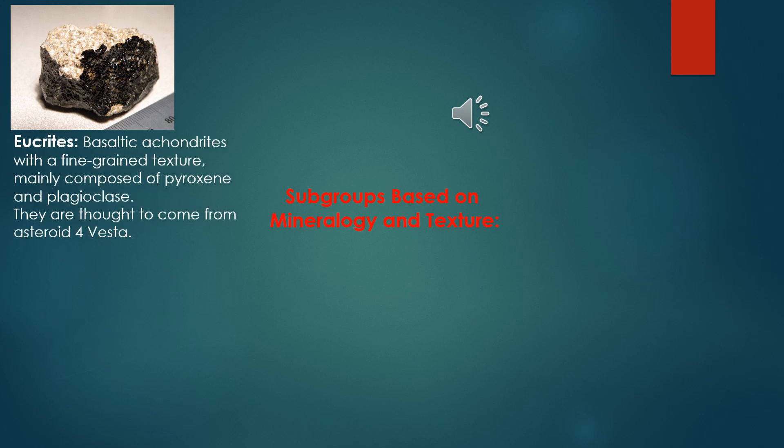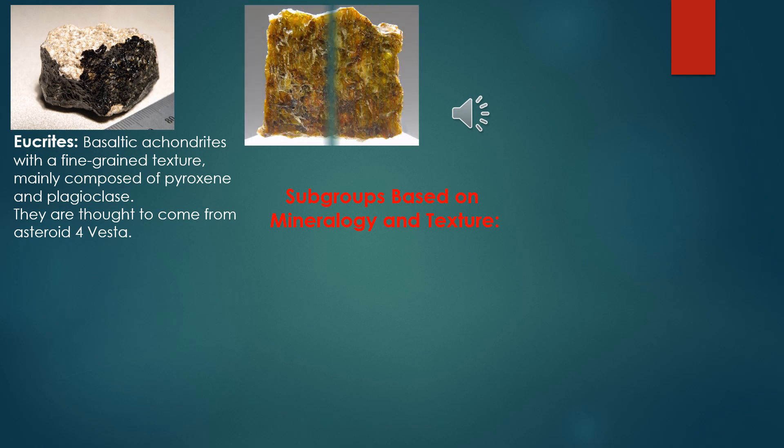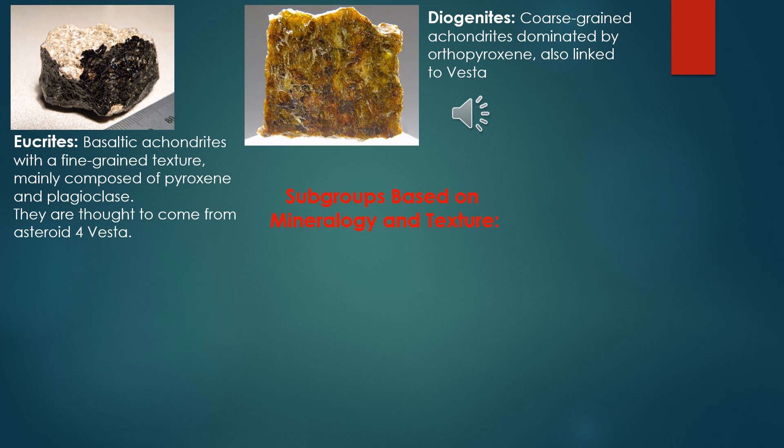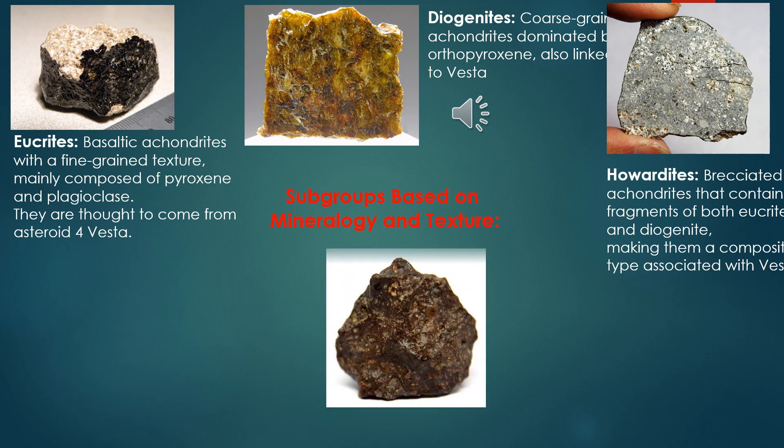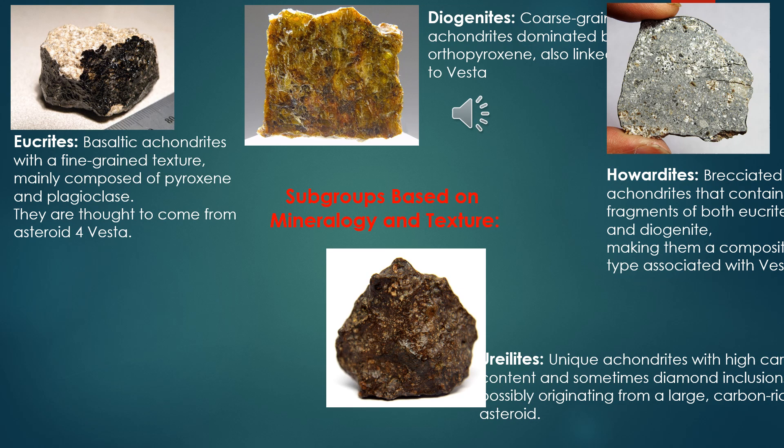Subgroups based on mineralogy and texture. Eucrites: basaltic achondrites with a fine-grained texture, mainly composed of pyroxene and plagioclase, thought to come from Asteroid 4 Vesta. Diogenites: coarse-grained achondrites dominated by orthopyroxene, also linked to Vesta. Howardites: brecciated achondrites that contain fragments of both eucrite and diogenite, making them a composite type associated with Vesta. Ureilites: unique achondrites with high carbon content and sometimes diamond inclusions, possibly originating from a large carbon-rich asteroid.